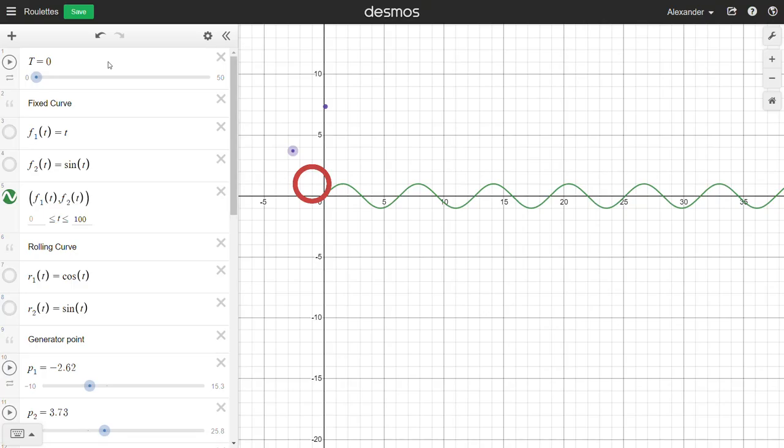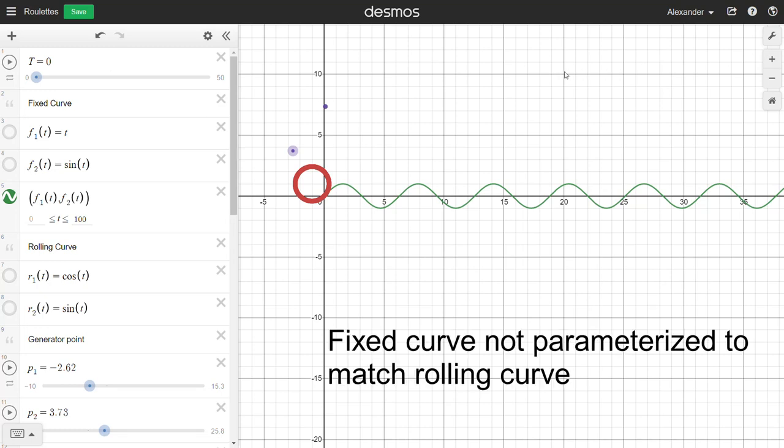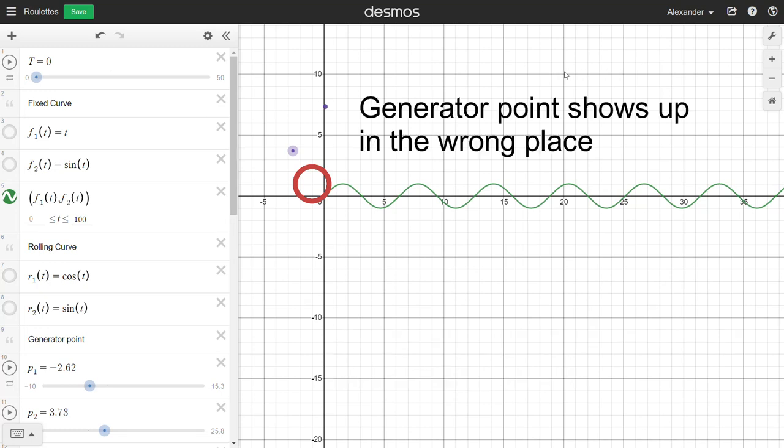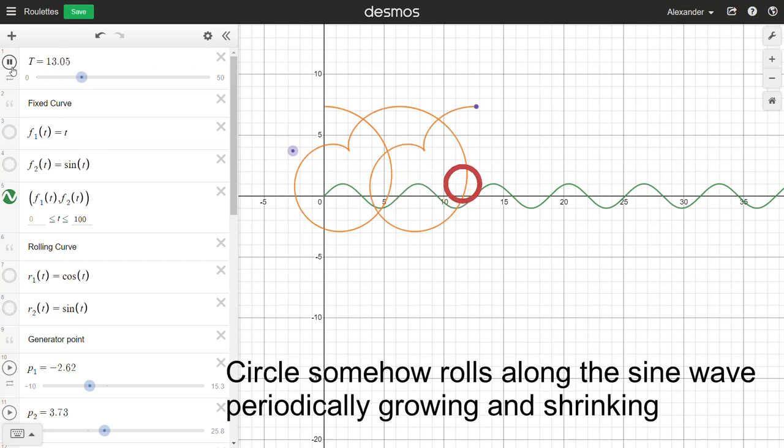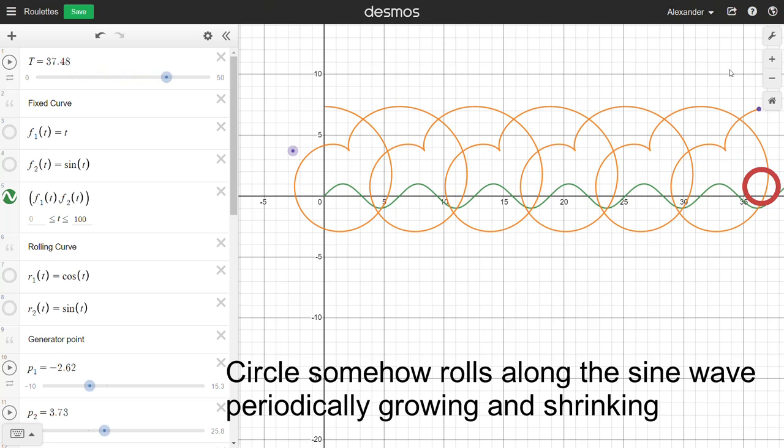While researching this topic, I discovered that if you do not parameterize your R and F curves such that they satisfy the rolling requirements, the roulette formula may still end up working, though perhaps not as you intended. Essentially, the roulette formula can auto-correct your mistakes. This is a fascinating property that I have no explanation for why it occurs.